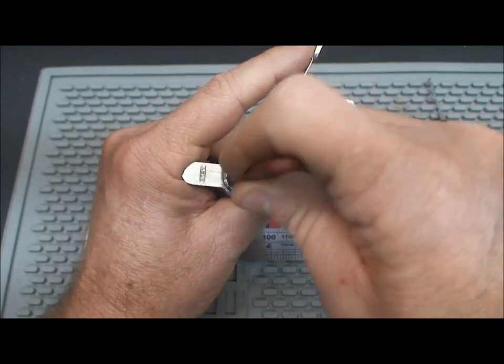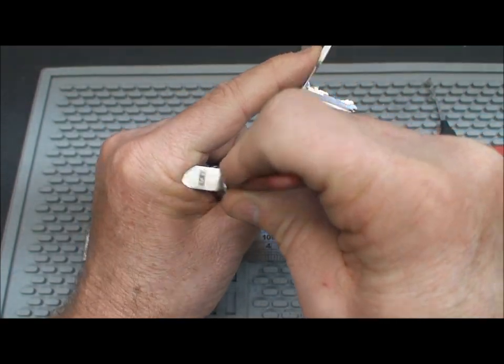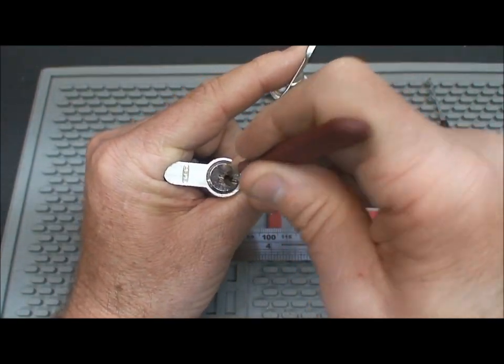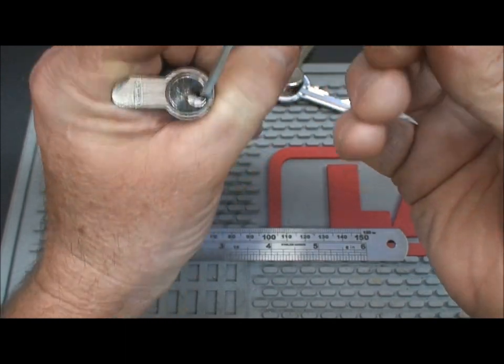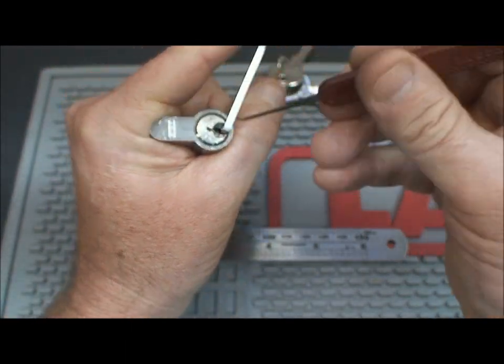I'm just going to put it in there and just go pin by pin, see if I can get a false set and get lucky because with these Abuses, that's the hardest part. There we go. All right, we've got a false set. You can see, just a very slight false set, but that's all we need, isn't it?